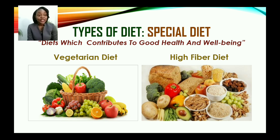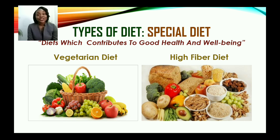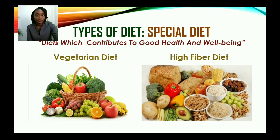A high fiber diet includes items such as bread — wheat bread specifically — vegetables, pastas, fruits, dried fruits such as raisins and apricots, and potatoes. A high fiber diet prevents constipation by enhancing regular bowel movements. It also prevents some types of cancers such as colon cancer, and helps persons feel fuller for longer.